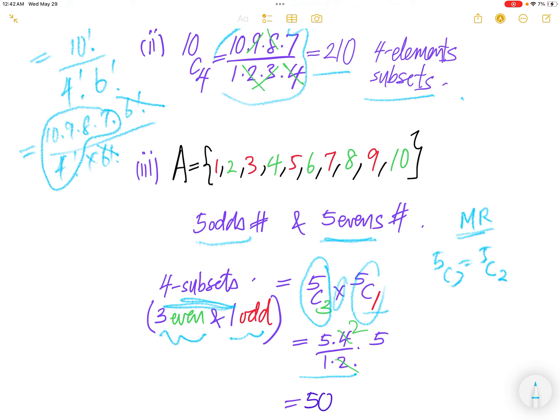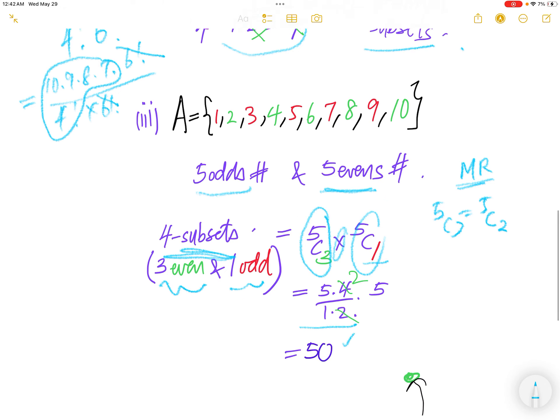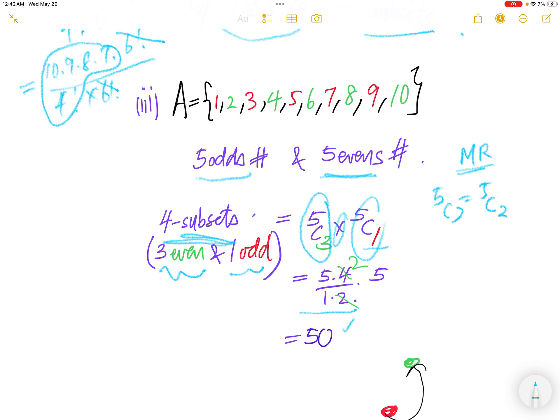5 choose 1 is 5. So 2 and 4 cancel, you get 2. 10 times 5 is 50. So you get 50 4-element subsets in which each subset has 3 even and 1 odd. Done.